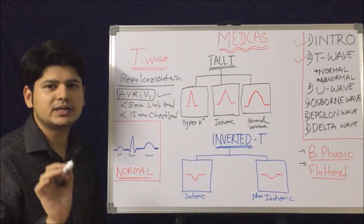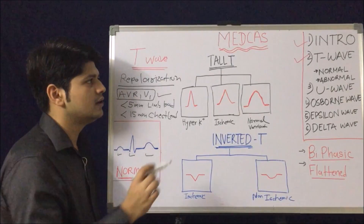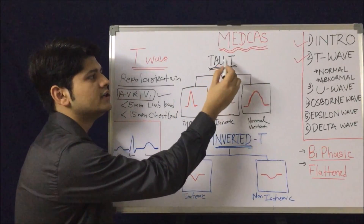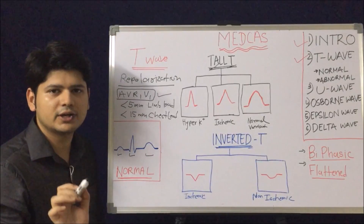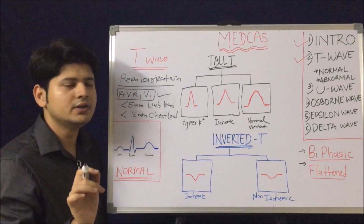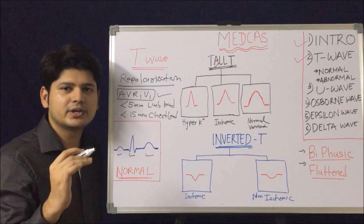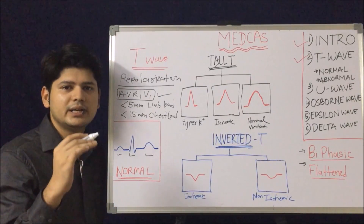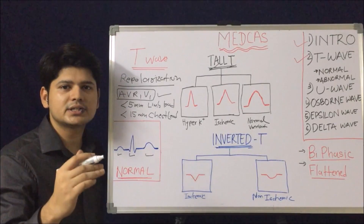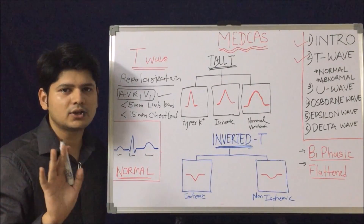Now let's understand the abnormal T waves. We have many variants. The first we will start with is the tall T wave. How to tell the T wave is tall: we have already understood what the normal T wave amplitude is. If the T wave amplitude in limb leads is more than 5 mm, or in the chest leads more than 15 mm, it is a tall T wave.